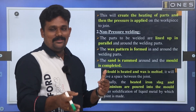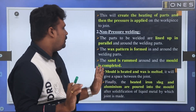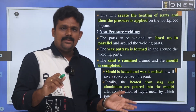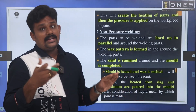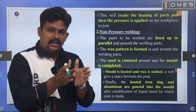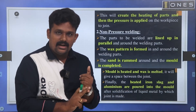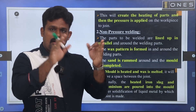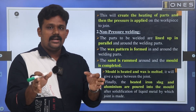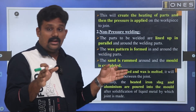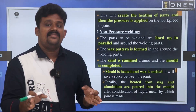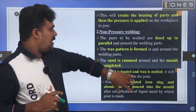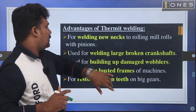The thermite mixture is aluminum plus iron oxide. I will elaborate and explain it with the corresponding figure. The process involves both pressure and non-pressure variants.